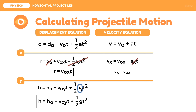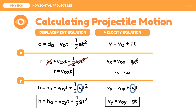Lastly, for the velocity of the y component, we write the velocity equation in terms of y components: vᵧ = v₀ᵧ + aᵧ·t. Since the acceleration along the y component is gravity, we can change it to g. Thus, vᵧ = v₀ᵧ + g·t.